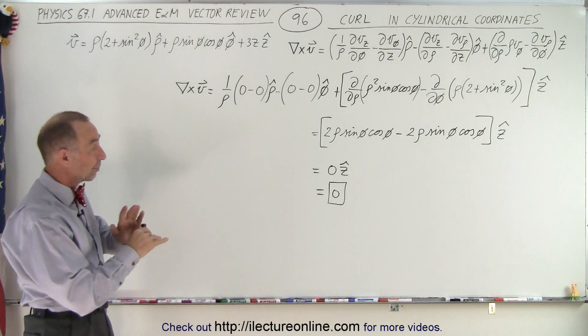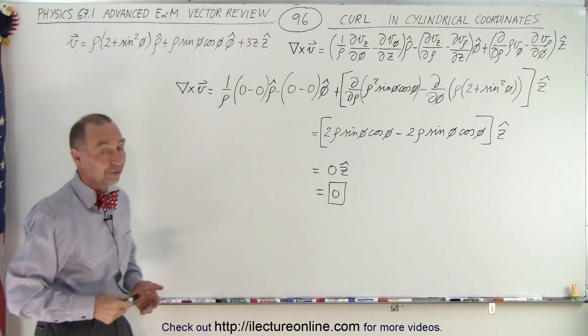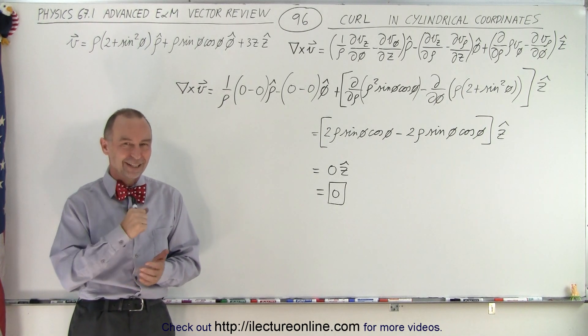Meaning that whatever that function is, there's absolutely no curl in that vector function. And therefore, we get zero. And that is how it's done.